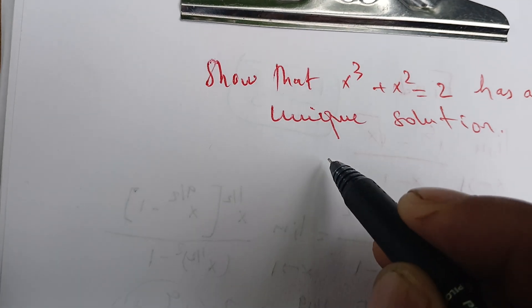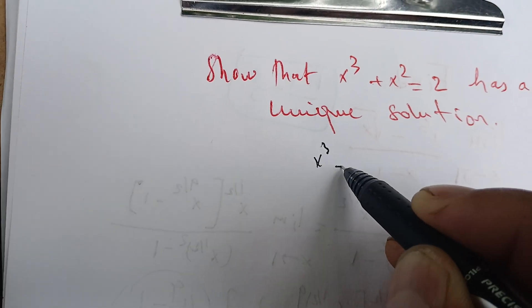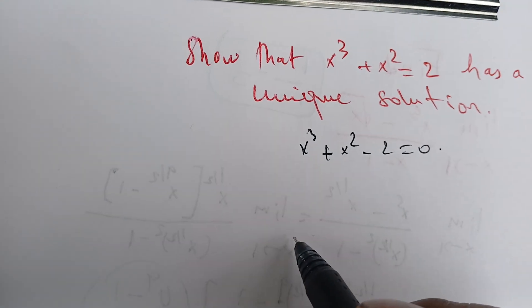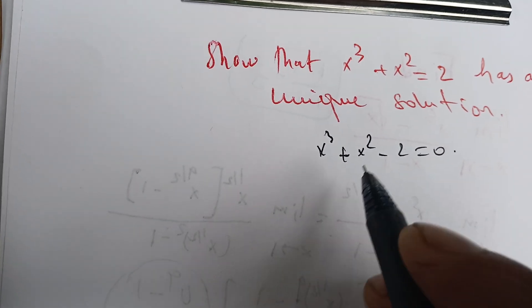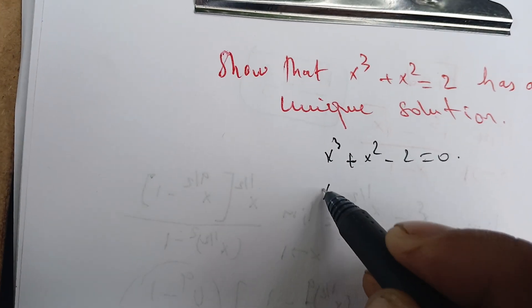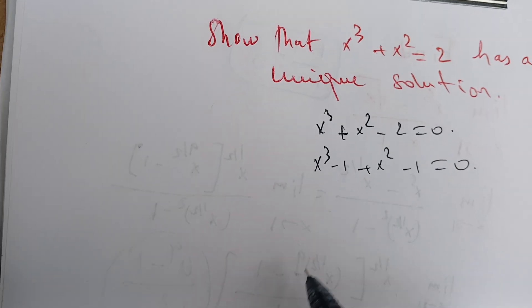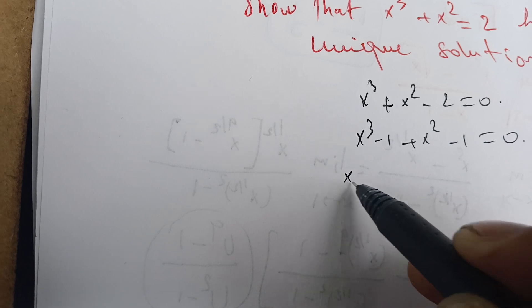We can do the following: x cubed plus x squared minus 2 equals 0. So we're going to split this 2 into 1 and 1, so it's going to be x cubed minus 1 plus x squared minus 1 equals 0.